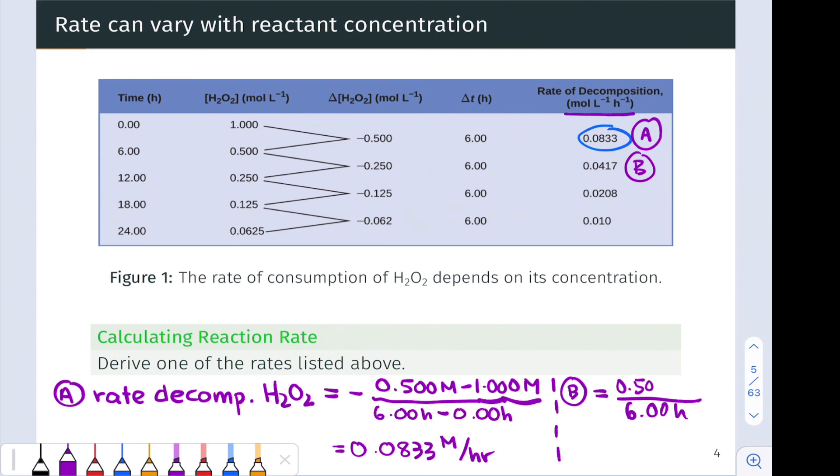And the change in concentration is 0.250 minus 0.5, but with a negative sign out front, let's go ahead and write that as 0.500 minus 0.250 moles per liter. And the result here, if we go through the math, is half the rate at point A or 0.0417 molar per hour. So fairly straightforward calculations, if we understand conceptually that a rate is a change in concentration per change in time.